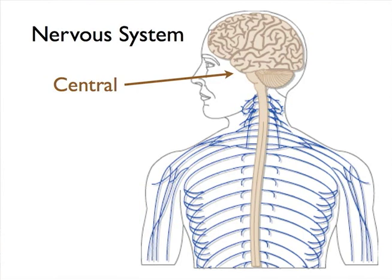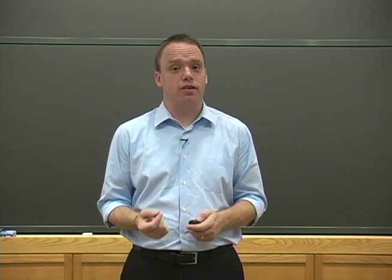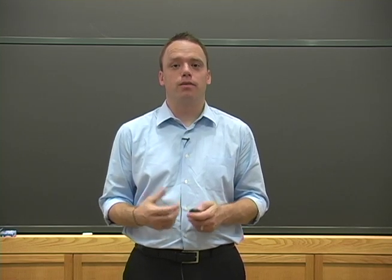In contrast, the second part of the nervous system is called the peripheral nervous system. The peripheral nervous system consists of a vast network of cranial and spinal nerves, and its function is to link the central nervous system with tissue and organs and other parts of the body. Our focus today is exclusively on the central nervous system, and in particular, the brain.